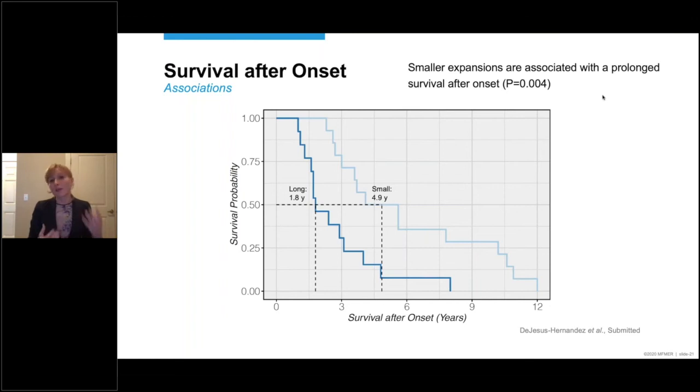On this slide, you can see an example of our survival after onset analysis. I've included a Kaplan-Meier curve. And again, the same colors are used. Light blue, bottom 50%, small expansion, dark blue, top 50%, long expansion. And you'll notice that in people with a relatively small expansion, the survival is increased. 4.9 years versus 1.8 years. And I should mention that we adjusted our models for differences in disease subgroup as well as age at onset. So it can't be explained simply by the number of FTD or ALS cases in one of these two groups.